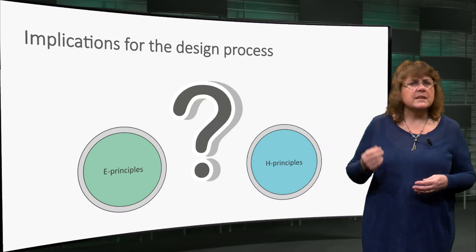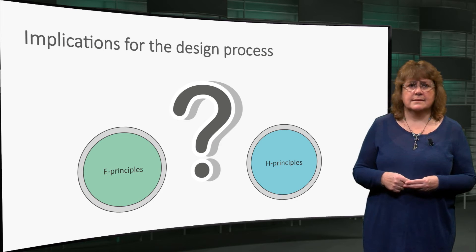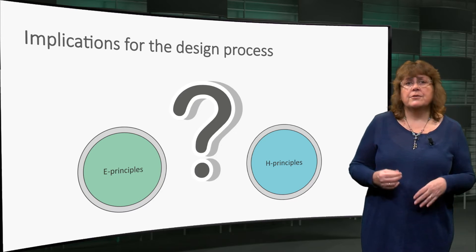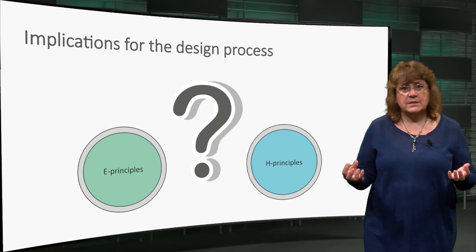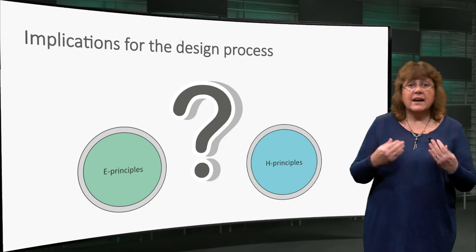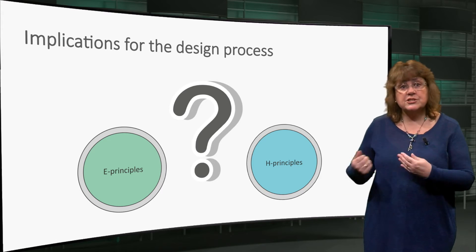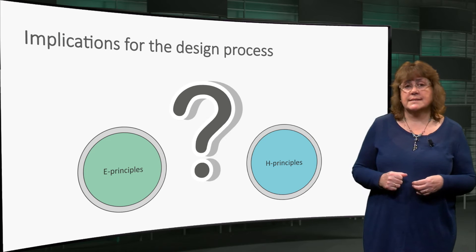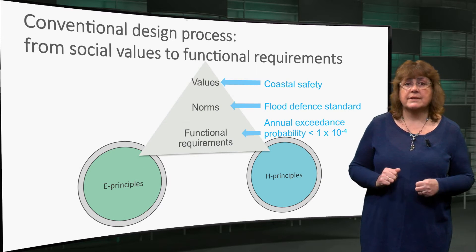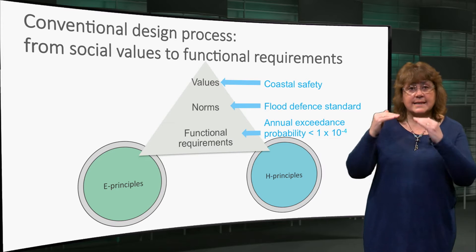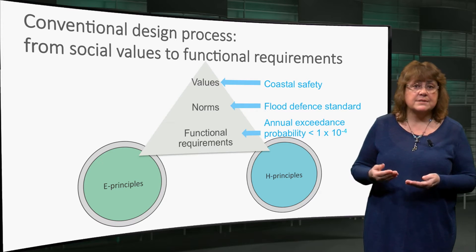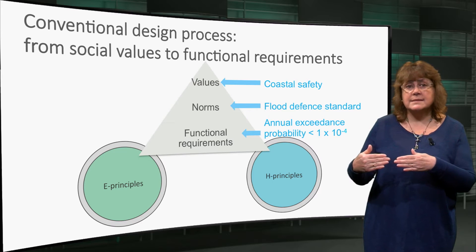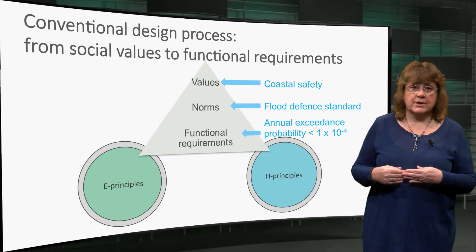But what does this mean for your design practice? You now know that engineering and ecological principles underpin building with nature design. But how does this differ from the conventional engineering design process? The conventional engineering design process translates societal norms or standards deriving from values into functional requirements that need to be met by the infrastructure.